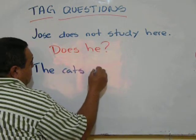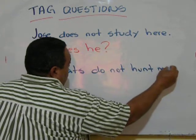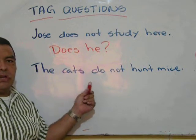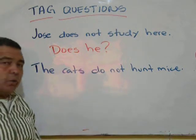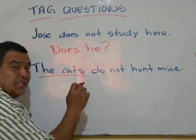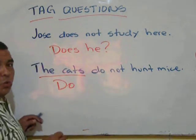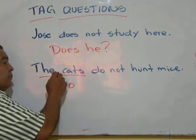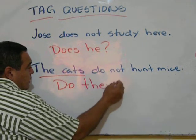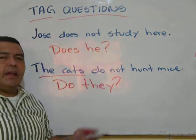Another example: 'The cats do not hunt.' The tag question has to go in a positive way. Because we're talking about the cats — plural — we use 'do,' and the pronoun for cats is 'they.' The cats do not hunt, do they?